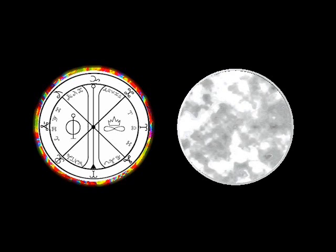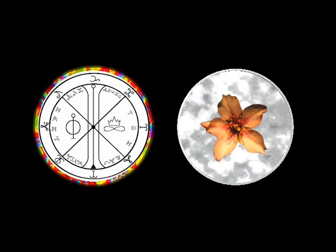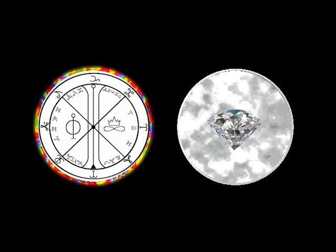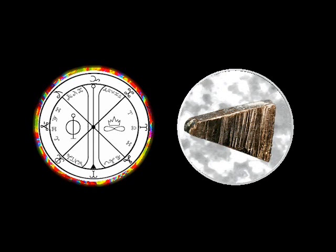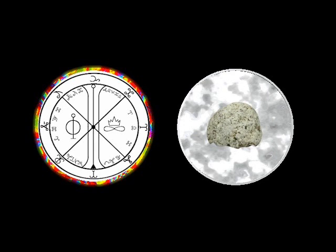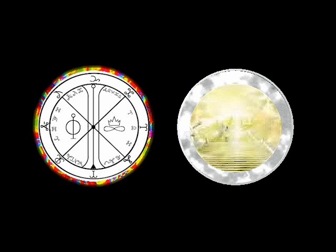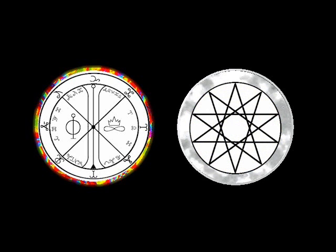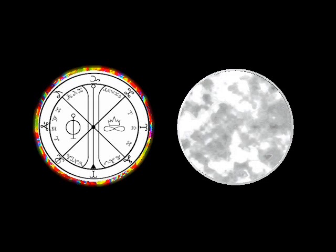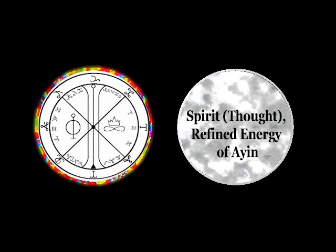Animal: None. Plant: Almond Flour. Stone: Diamond. Metal: Uranium. Incense: Ambergris. Image: Androgynous Being of Light on Throne of Light. Symbol: Decagram, Ten-Pointed Star. Planet: None, The Nexus of All Worlds and Universes. Elemental Energy: Spirit, Thought, Refined Energy of Ain.